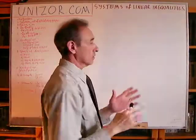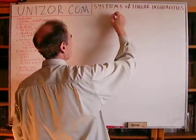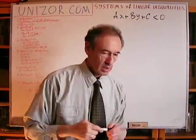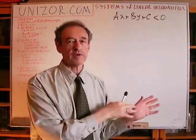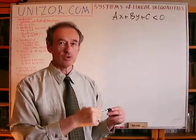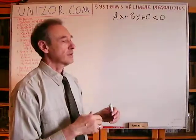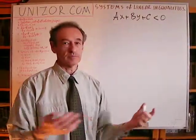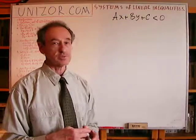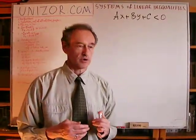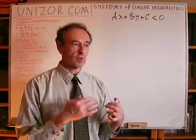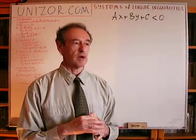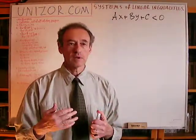Now let's talk about the general form of a linear inequality in two variables. The next case is two variables, where we can have two or more inequalities combining linear functions of two arguments. I specifically emphasize one, two, and three arguments because all of these have a visual representation — one argument on a number line, two arguments as a point on a coordinate plane, three arguments as a point in three-dimensional space.